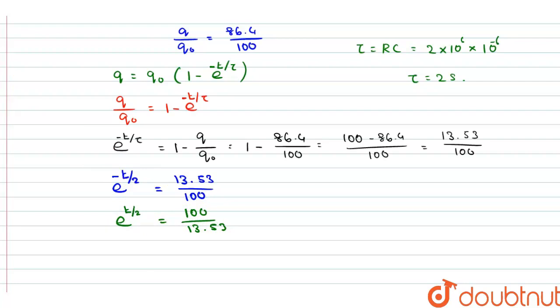Therefore, e to the power t by 2 is equal to 100 divided by 13.53. Now, to eliminate the exponential term, we take logarithm on both sides. So, logarithm e cancel.